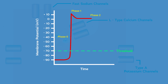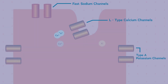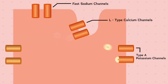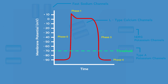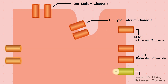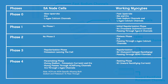Following Phase 2, we reach Phase 3 — the repolarization phase — where L-type calcium channels close and potassium channels responsible for repolarization open. Once the resting membrane potential is restored in Phase 4, the inward rectifying potassium channel takes over. A key difference between inward rectifying potassium channels and Type A potassium channels is that inward rectifying channels allow potassium to enter the cell at negative potentials, whereas Type A channels conduct potassium out of the cell at positive potentials.